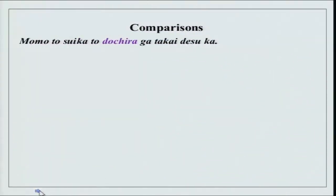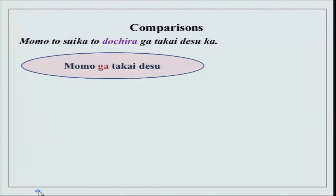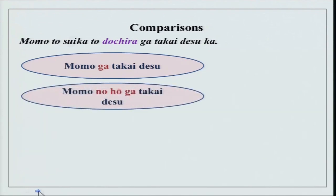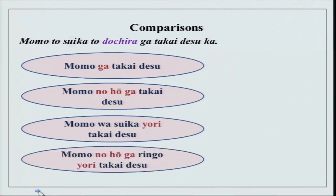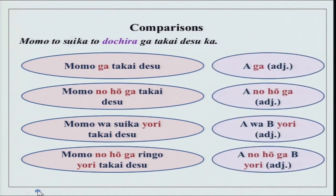Momo to Suika to dochira ga takai desu ka? — Momo is peach, Suika is watermelon. You can answer: Momo ga takai desu. Or: Momo no hou ga takai desu. Or: Momo wa Suika yori takai desu — Momo is more expensive than Suika. All of these are valid. In summary: A ga takai; A no hou ga takai; A wa B yori takai; A no hou ga B yori takai. Your preference is very clear.